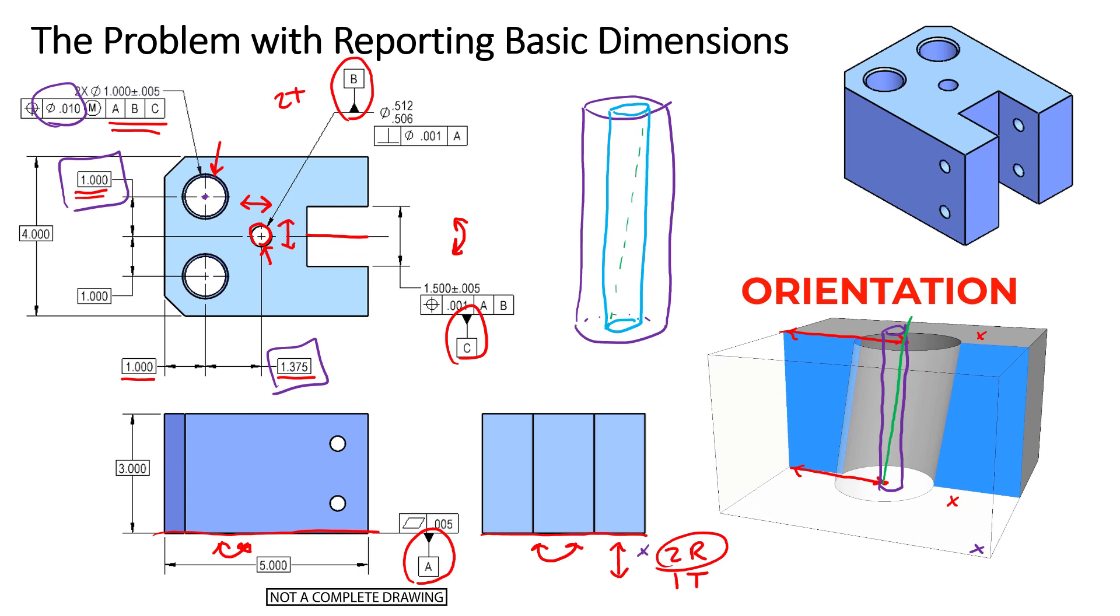There is no harm in including any extra data in an inspection report, but you must report the total position error as defined by the ASME Y14.5 standard in order to deem this feature accepted or rejected.